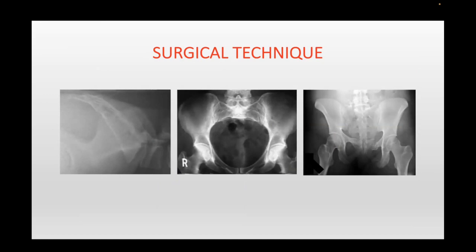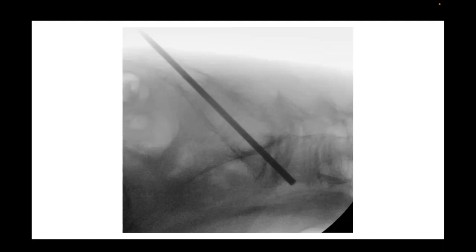A lot of these procedures are done in outpatient surgery centers nowadays. Once you have your views, the procedure goes smoothly. You draw a line down the sacral body for the inlet view and down the alar line. We want to make sure all screws are caudal to that alar line — otherwise you can irritate the L5 root. Typically, you place one pin just caudal to the alar line, try to make it a dot so it goes straight, then place two more pins.